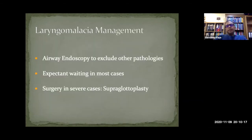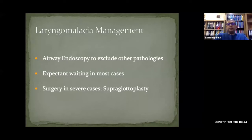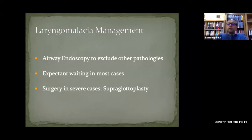Management-wise, if a general pediatrician or general ENT surgeon sees these kids in outpatient clinics and the child is thriving well and the history fits, they may manage on history alone. But by the time they are referred to us in tertiary centers, unless the child is absolutely well and thriving, I have a very low threshold for scoping. Airway endoscopy is done to confirm the diagnosis but also to exclude other pathologies.